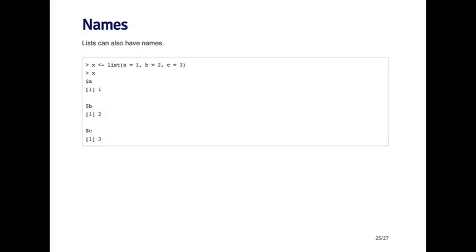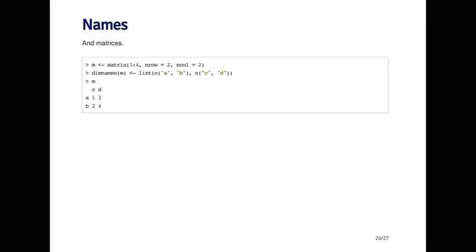Lists can also have names. Here I'm creating a list where the first element's called A, the second B, and the third C. When I print out the list, it shows the names and values associated with each element. Finally, matrices can have names — these are called dim names. I've created a two-by-two matrix from the sequence one to four, and using the dim names function I assign it a list where the first element is the row names vector and the second is the column names vector. I want rows named A and B, and columns named C and D, so now when I print the matrix the row and column names are labeled as specified.